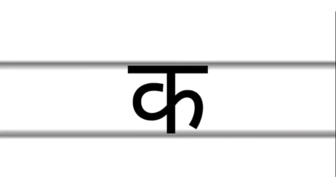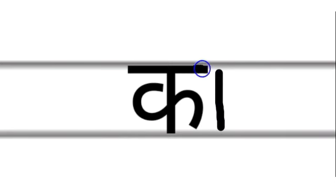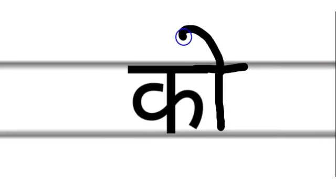Next letter: Kai. How do you write Kai? First, you add a standing line on the right side of the consonant and draw two hooks on the top of the standing line. What is this letter?